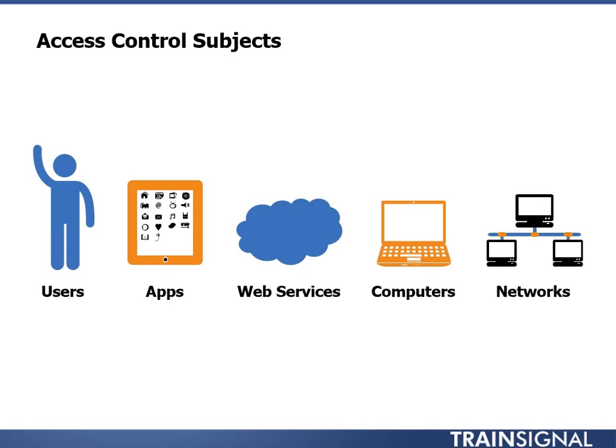But in a modern network a subject can really be many different things. Often apps themselves are subjects — not necessarily an app on an iPad, but it can be an app running on a server. For example, a web application that needs to access a back-end database. When a user connects to the web server, the web server then needs to communicate on behalf of that user to a database. So the user is a subject and the web server is a subject, and the web server is accessing the database as the object.